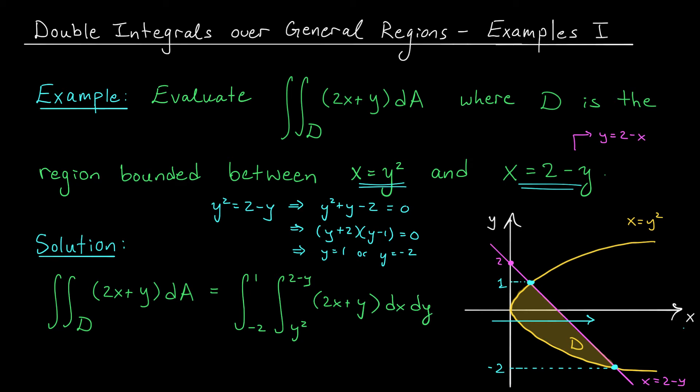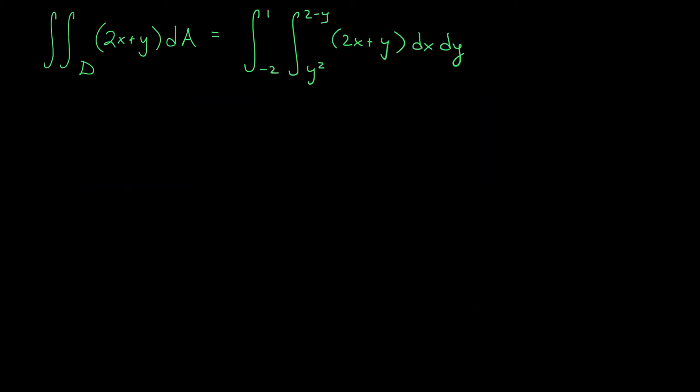Okay, fantastic. We've set up our integral and we're going to evaluate it on the next slide. To evaluate our iterated integrals, we start from the inside and work our way out. So we're going to start by evaluating this integral, the integral from y squared to 2 minus y of 2x plus y dx.